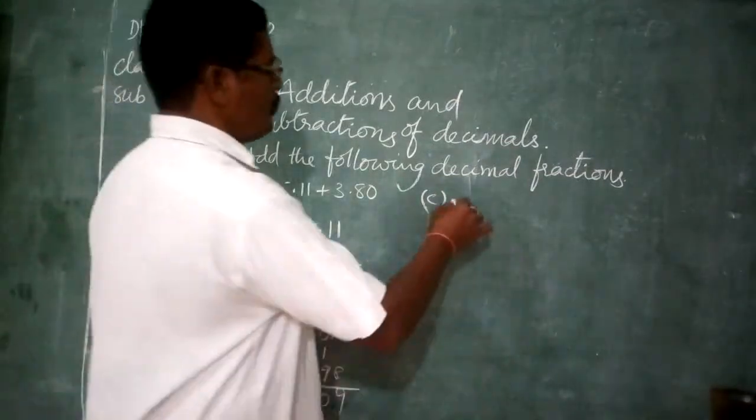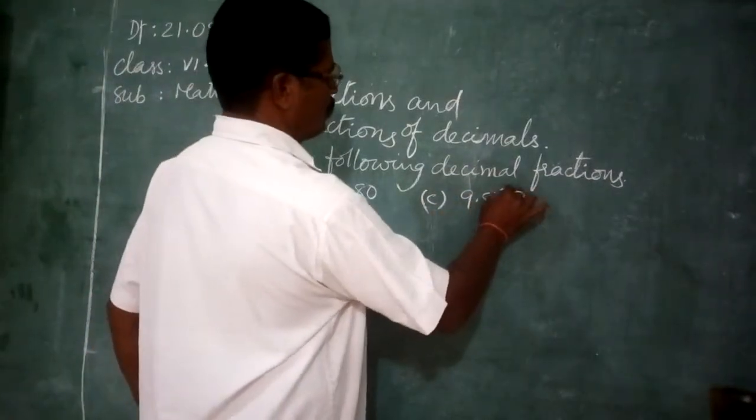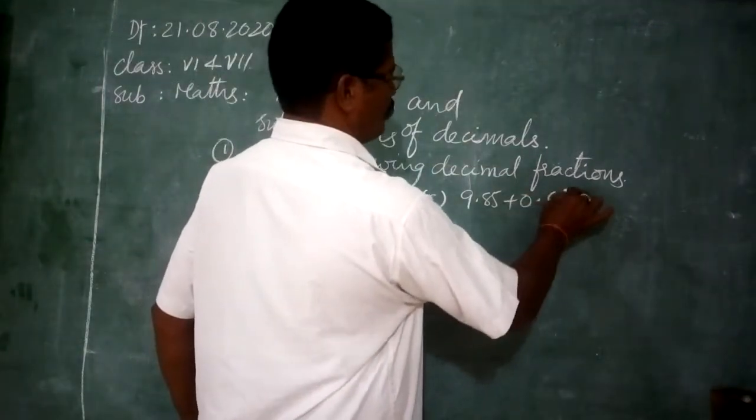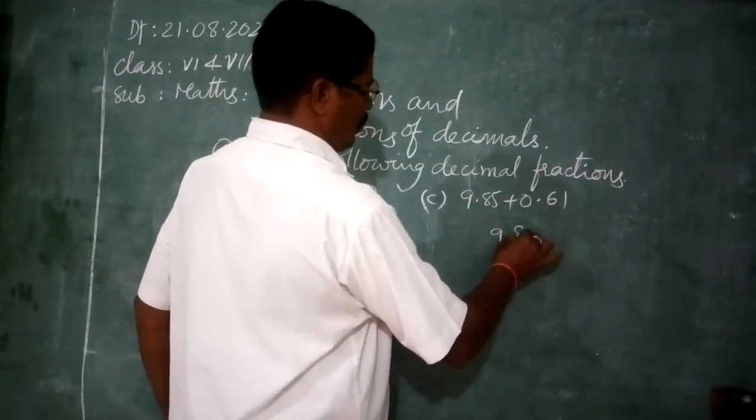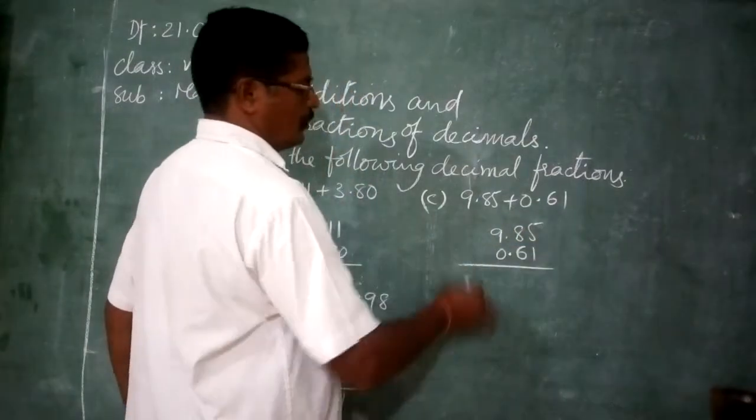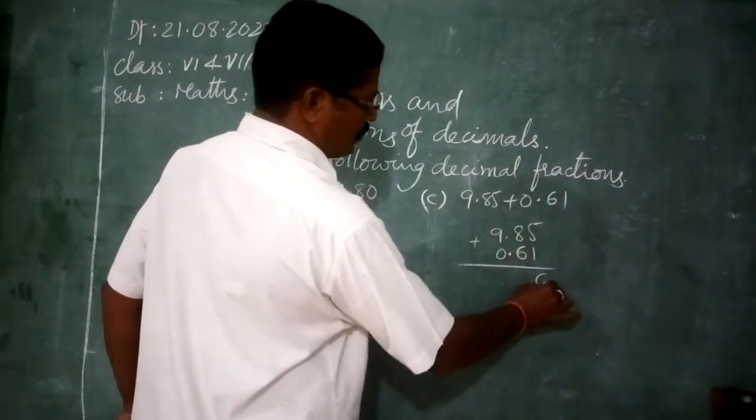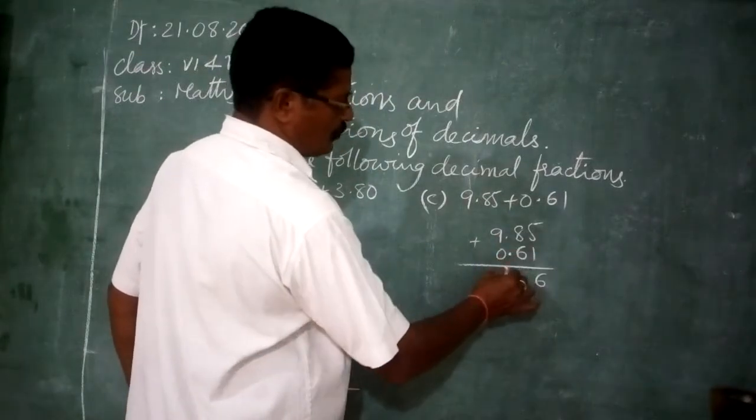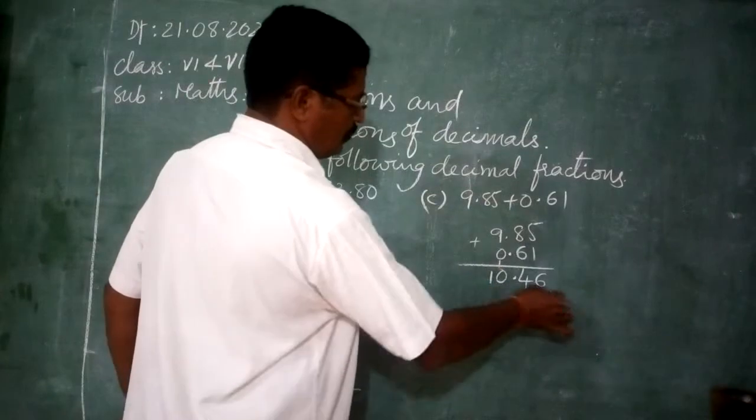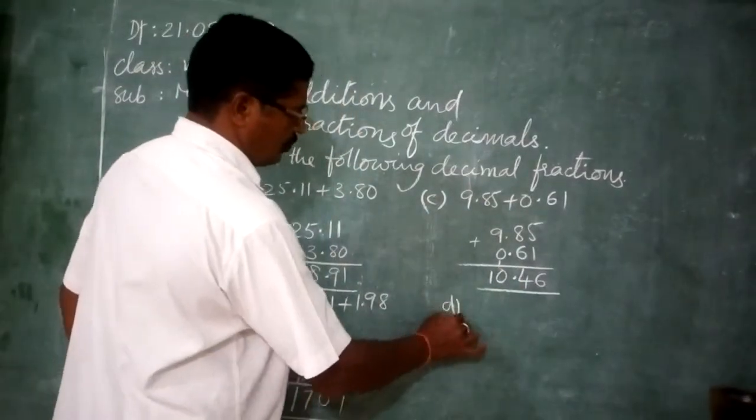Next question. 9.85 plus 1.6. 8 plus 6, 14. 9 plus 1, 10. This is the answer. Next question.